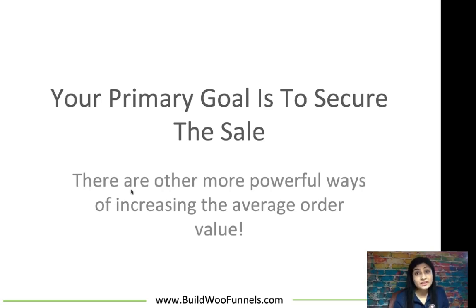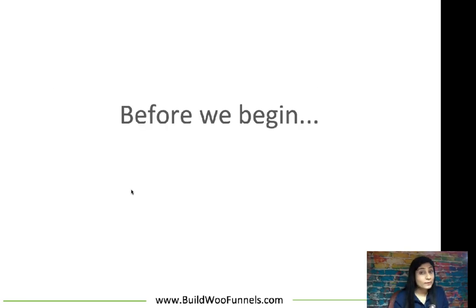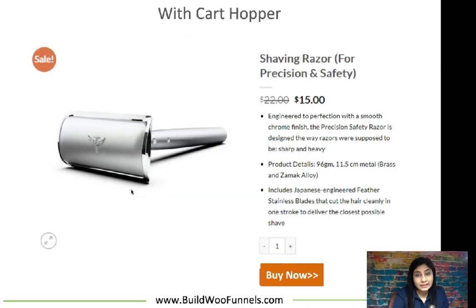Another way is using post-purchase upsell funnels. You should definitely check out Upstroke, which is another product of BuildWooFunnels — it lets you create high-converting upsell funnels. But that's for another video. Before I show you how to skip the cart using CartHopper, I'll show you a high-converting checkout page built by Arrow specifically to sell this shaving razor — not the standard WooCommerce checkout page, but built exclusively to sell one product.